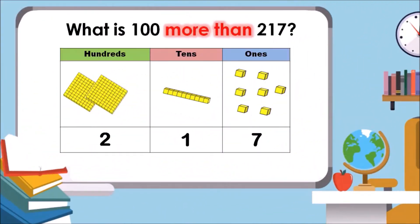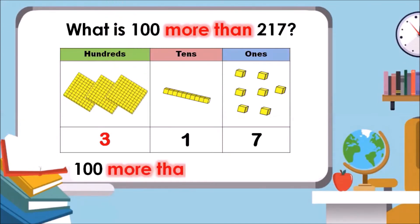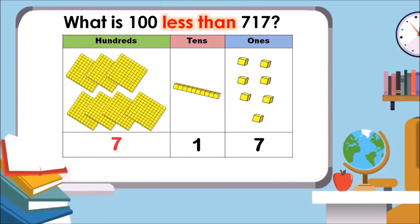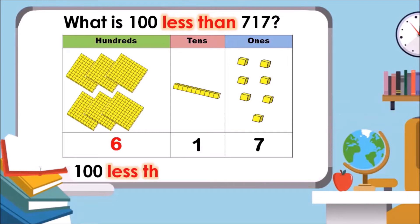What is 100 more than 217? Let us add 100 to the hundreds place. 100 more than 217 is 317. What is 100 less than 717? Let us take away 100 from the hundreds place. 100 less than 717 is 617.